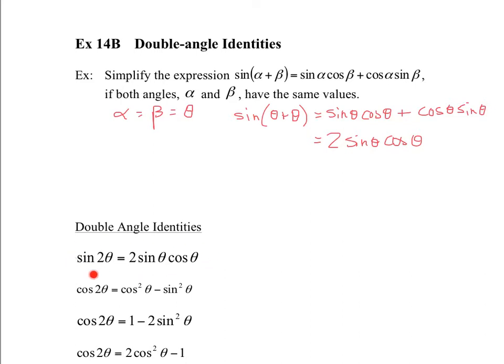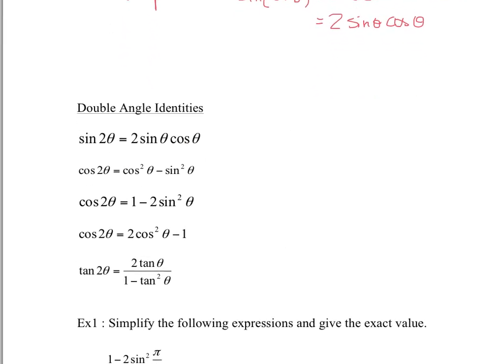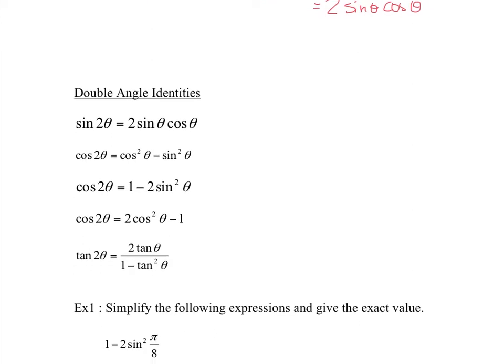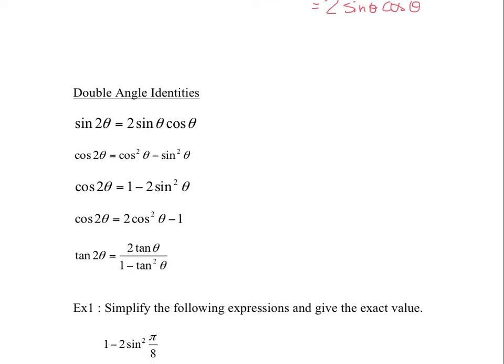So this is the first one we're going to learn. Notice it's the same as what we derived. Sine of two theta — if you add the two thetas together, you get two theta — equals two sine theta cos theta. I could do the same thing for the cosine and tangent functions, and this is what we get. Notice that there are three different versions for cos 2 theta.